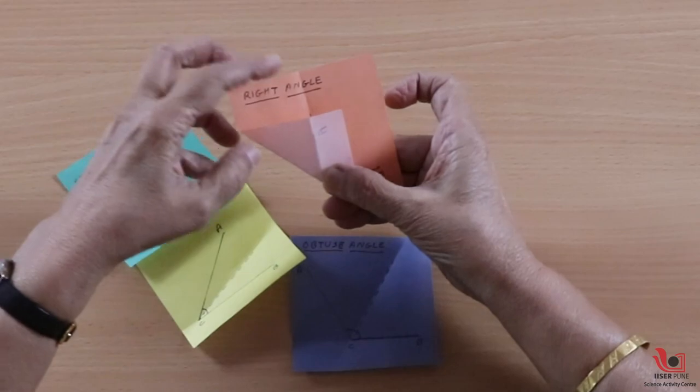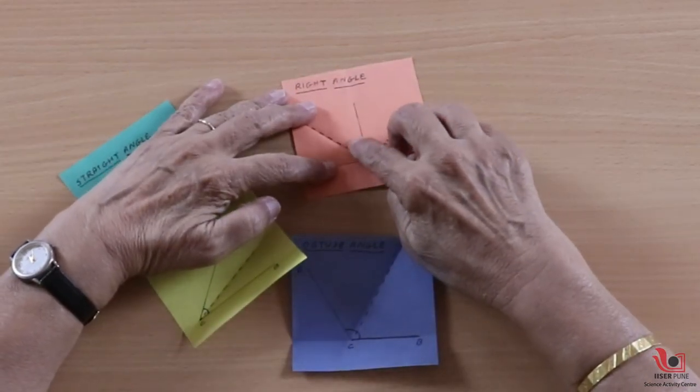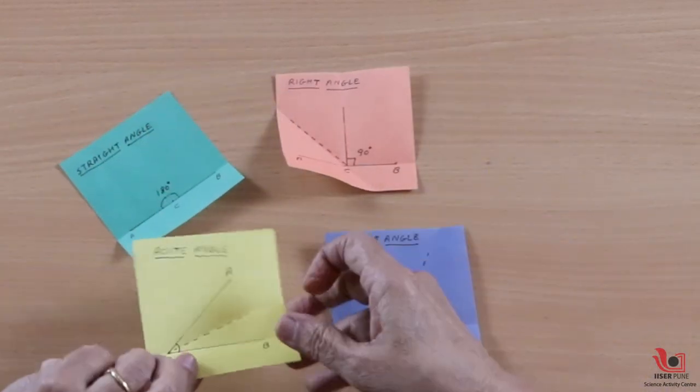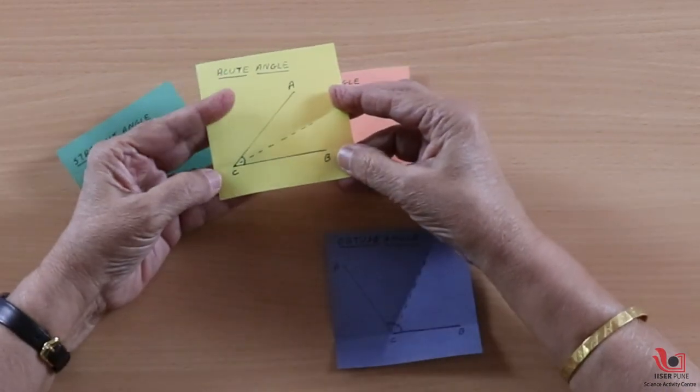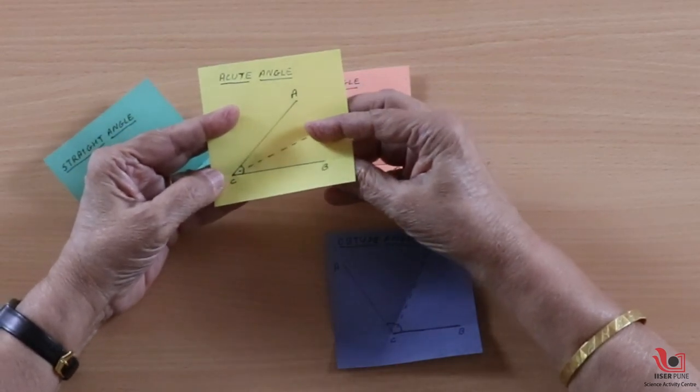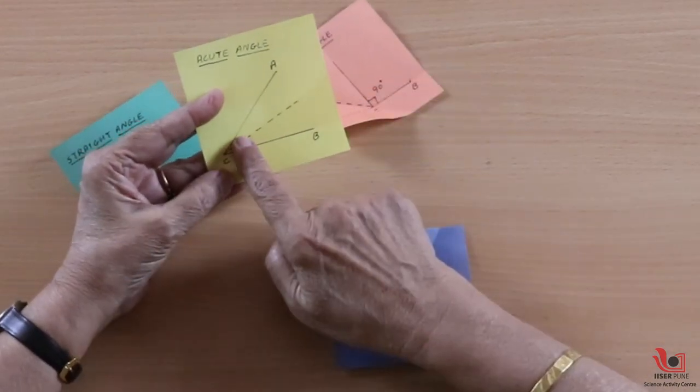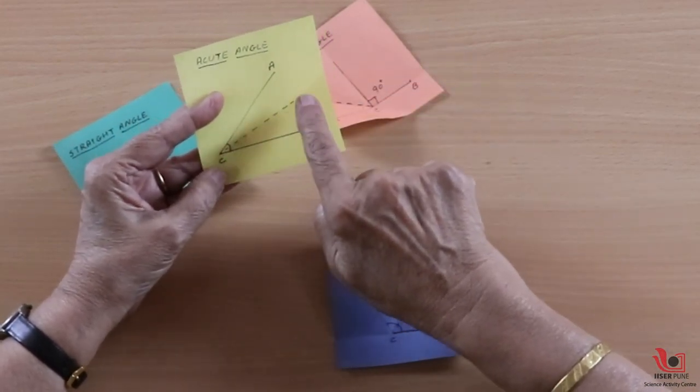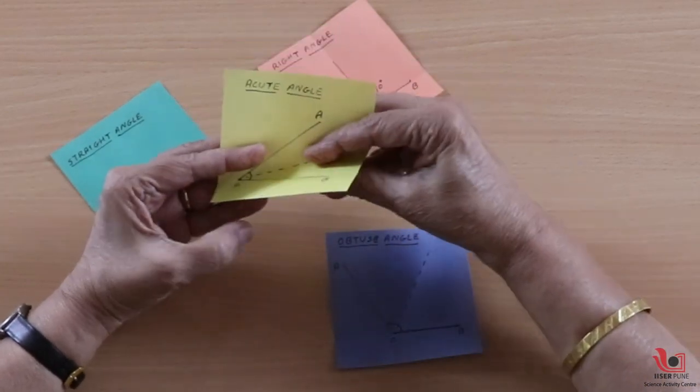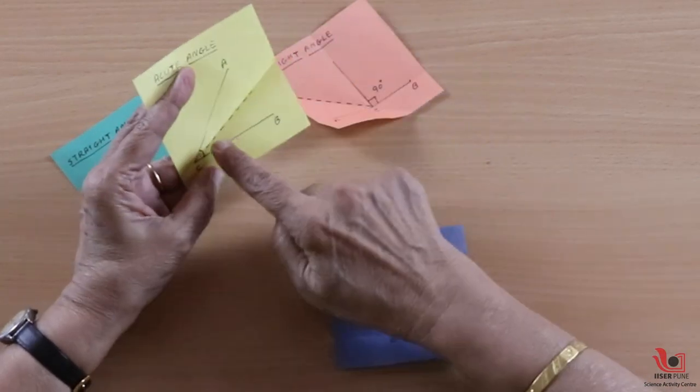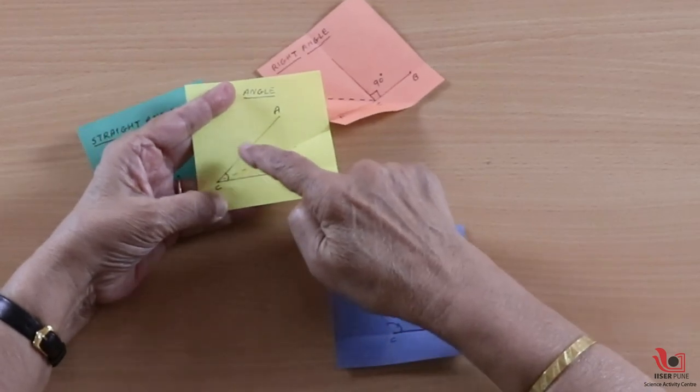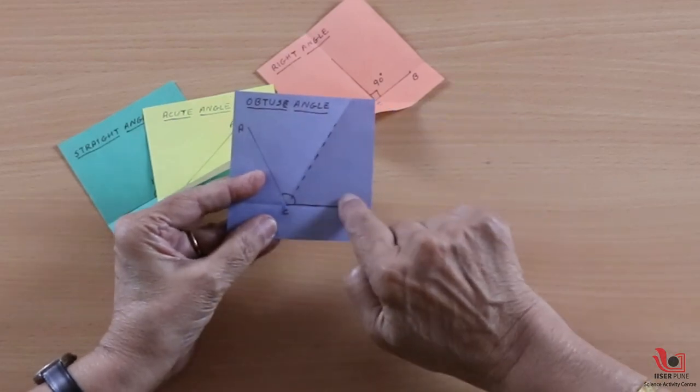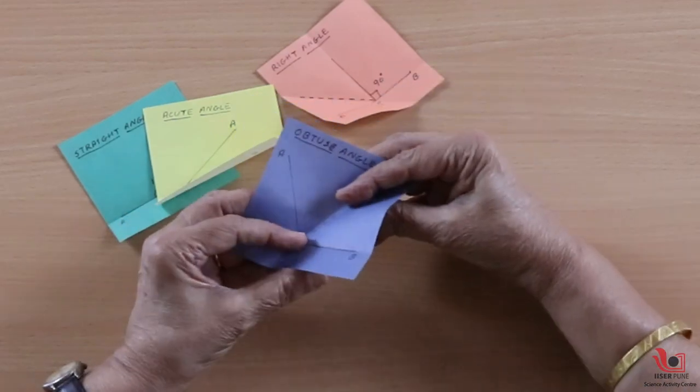This 90-degree angle is getting divided into two equal parts. Now this is an acute angle. I am going to divide it into equal parts in the same way by joining this line of the angle with that line. This angle is getting divided into equal parts. Same with this angle, I am joining this line with that line and the angle is getting divided.